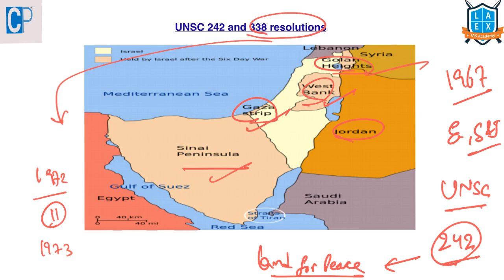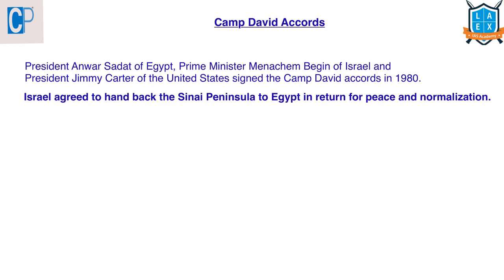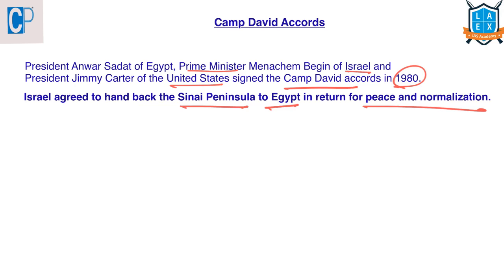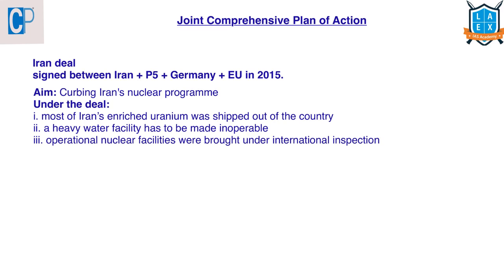The Camp David Accords were signed in 1980 by the President of Egypt, the Prime Minister of Israel, and the President of the United States. Under this accord, Israel agreed to return the Sinai Peninsula — occupied in the 1967 Six-Day War — to Egypt in return for peace and normalization. This was the first time an Arab country signed a peace treaty with Israel and accepted its existence. As a result, Egypt was expelled from the Arab League.